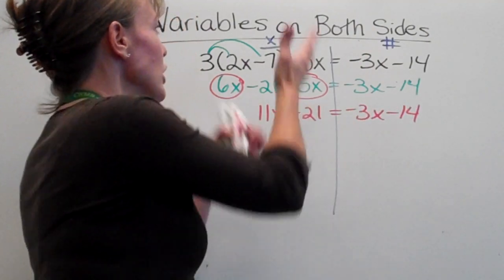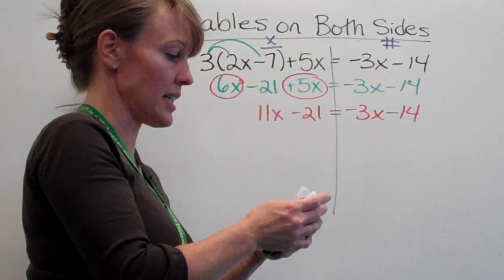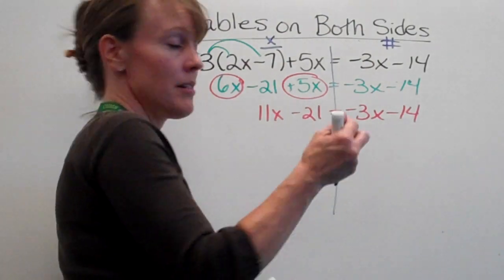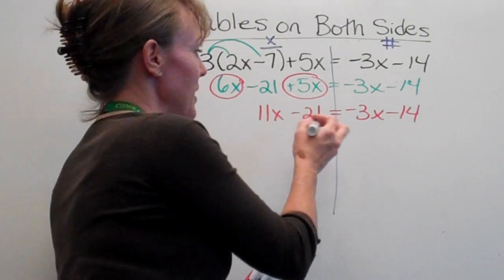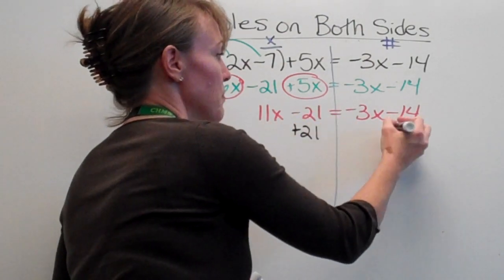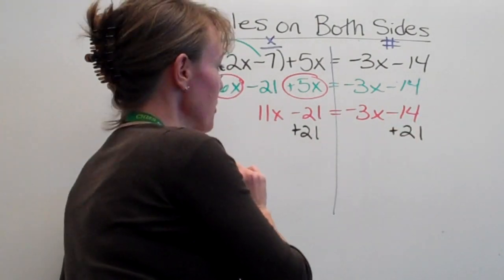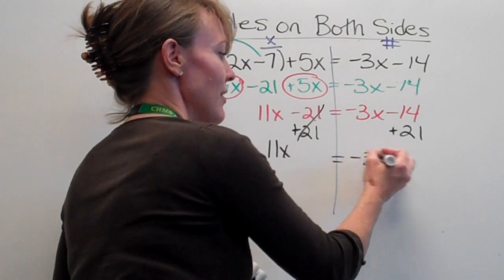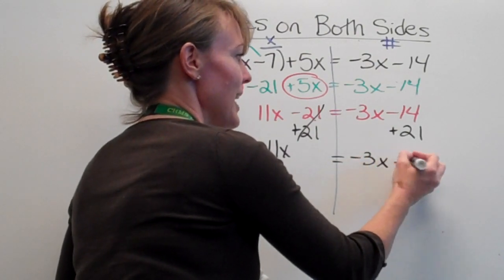All right, now we're going to look at the x side. That's why we labeled it. What does not belong here? Ah, that would be my negative 21. So I'm going to add 21 to both sides, numbers with numbers. These guys cancel out. 11x is equal to negative 3x plus 7.